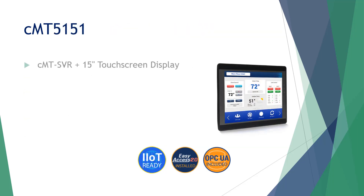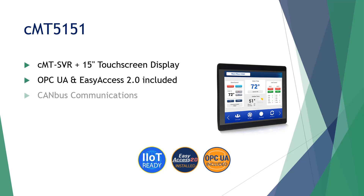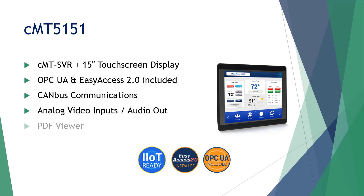The CMT5151 is essentially a CMTSVR with an integrated 15-inch touchscreen display to easily accommodate and display even the most complex control systems. It offers all the features and capabilities of the CMTSVR and our Advanced series HMIs, plus more. The CMT5151 comes with OPC UA and EasyAccess 2.0 already activated and included — no extra purchase needed. Additional hardware features include CAN bus support and analog video inputs. The CMT5151 also has an audio out jack that allows you to connect speakers for audible alarms or media playback. Unique to the CMT5151 is the ability to display PDFs and support for Ethernet printers that use the CUPS printer protocol.